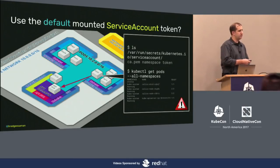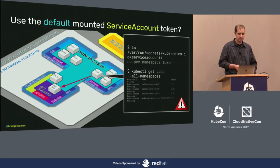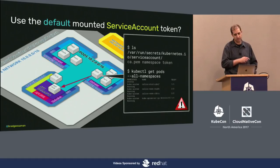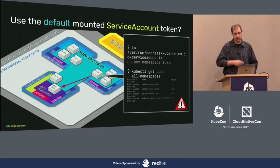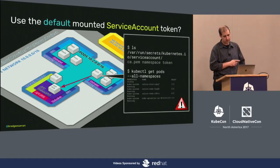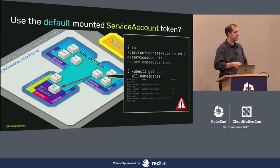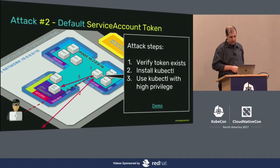The default service account token located in its directory is auto-mounted in a lot of clusters. Specifically before RBAC, this is a really big deal. If you have RBAC enabled we'll get to that, but if you can run kubectl you can get pods, get secrets, and you're cluster admin. Red triangle — bad day.